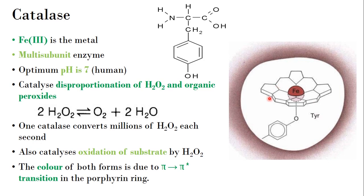Below the porphyrin plane is called the proximal side, and anything above the porphyrin part is in the distal side. In catalase, tyrosine is present in the proximal side. Tyrosine has a phenolic OH group, and this oxygen is bound to the iron of the enzyme. So tyrosine is attached in the proximal side.